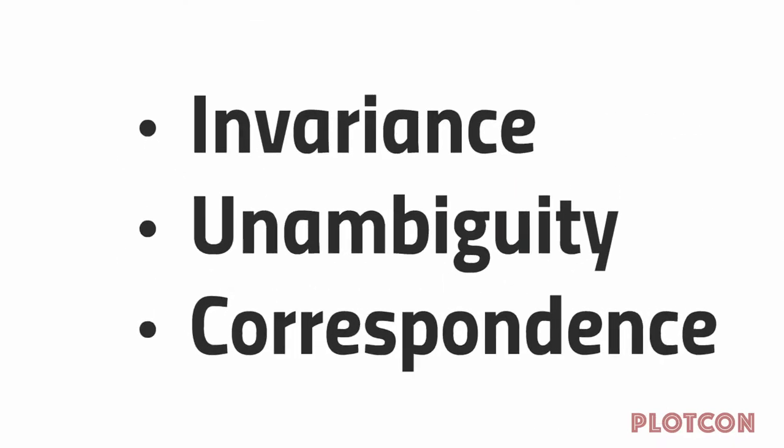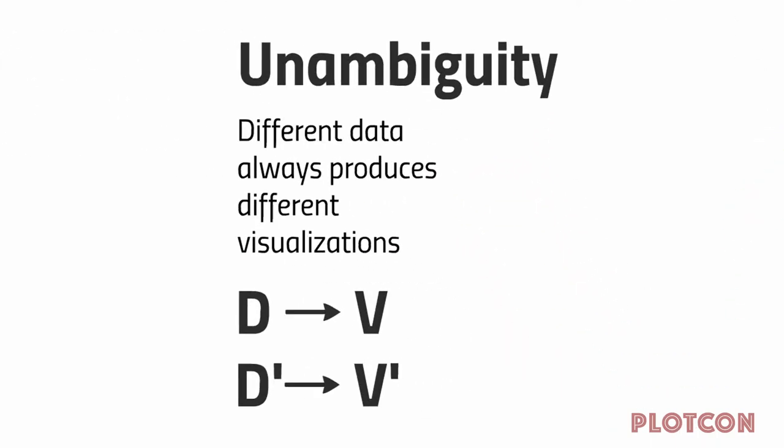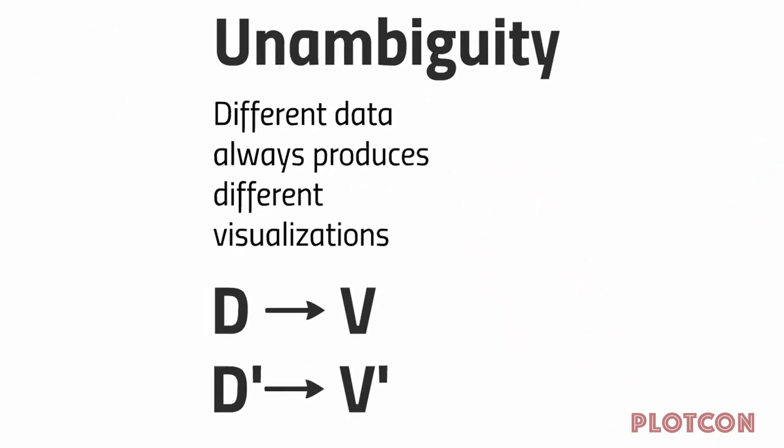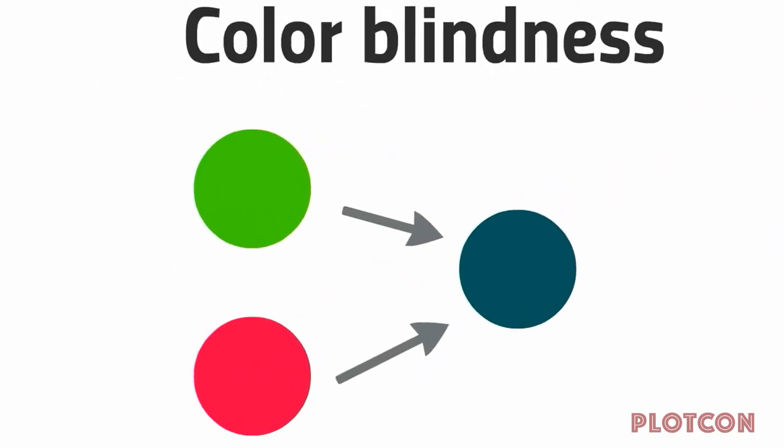The next property is unambiguity — it says that if the data changes, the visualization should change. This is the logical dual of the first property: if the data doesn't change, the visualization should not change. Conversely, if we have different data, we should produce a different visualization.